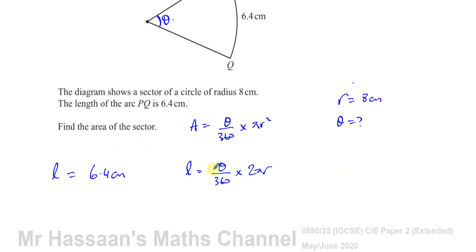So, using this formula, I can find theta, because I know that the length of the arc is 6.4 cm. I want to find theta, and the only other thing which I have to find or use is r, which is 8. So there's only one unknown, which is theta.